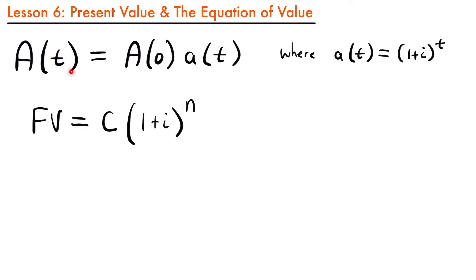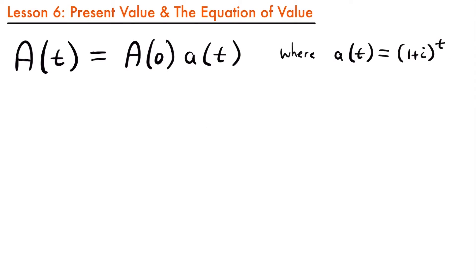We have that alternate equation where the accumulation at time t is equal to the accumulation at time zero, or that initial deposit, times the accumulation factor, where that accumulation factor is written with a variable of t — one plus i to the t power. We can rewrite this equation to represent a present value, or the value today that we need to deposit to get a particular value in the future.